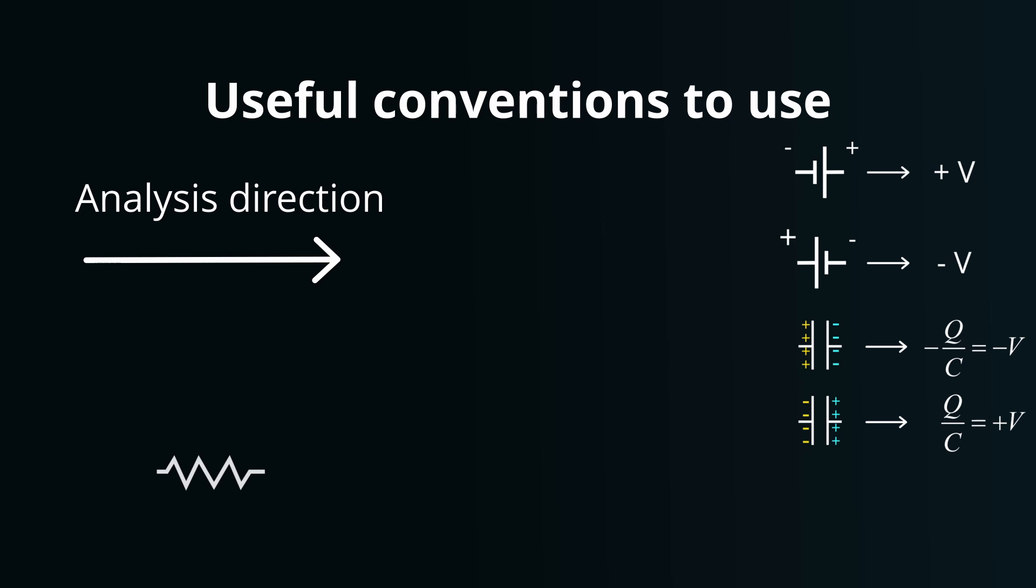In the case of resistors, if the current's direction aligns with our left to right analysis, the voltage drop is minus IR, or minus V. Should the current flow oppose our direction, the voltage becomes IR, or plus V.